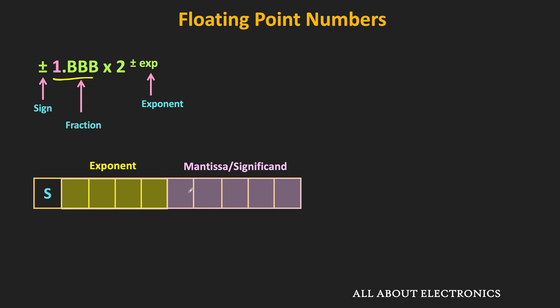To store floating point numbers, a certain standard has been defined specifying how many bits are reserved for the exponent and mantissa parts, and how to store the mantissa and exponent. Since the exponent can be positive or negative, we need to decide how to store it. A common standard has been defined for this purpose, and one such commonly used standard is IEEE 754. In the next video, we will see the format of this IEEE standard and understand how floating point numbers are stored as per this standard.